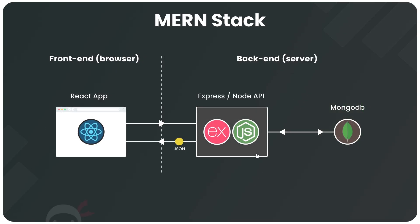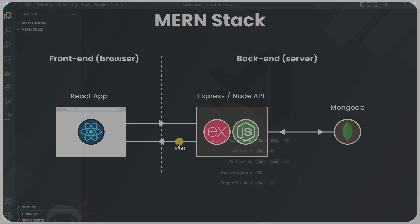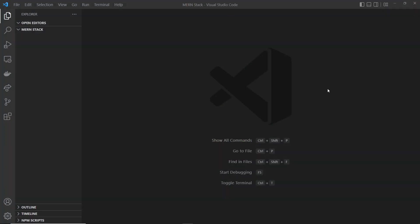The first thing we're going to do is start work on the back end of the application to make an API. That means we'll be setting up an Express app using Node.js. This Express app is going to allow us to easily create an API for us to reach from the front end React application later on, and it's also going to be able to communicate with our database MongoDB to fetch any data it needs to send back to the browser.